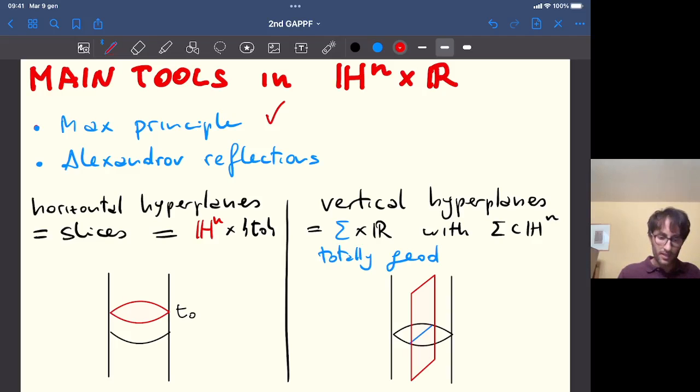On the other hand, when we talk about Alexandrov reflections, we have to be very careful, because this tool depends strongly on the ambient manifold. Why? First of all, because we need the right notion of hyperplane. We need to give meaning to the word hyperplane in a Riemannian manifold.